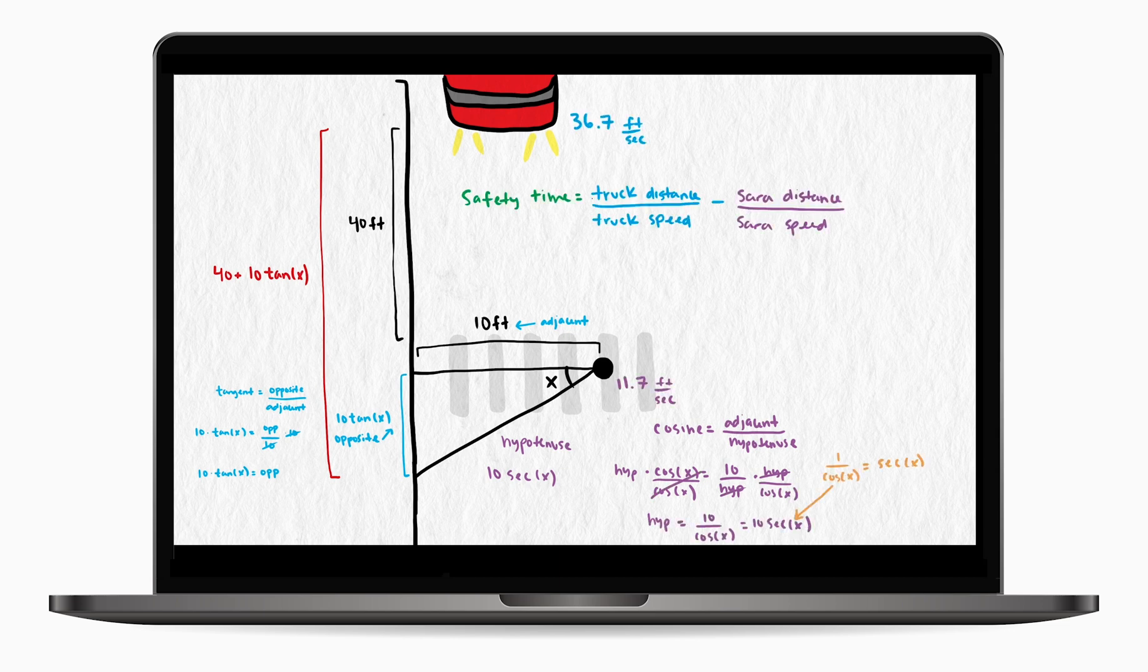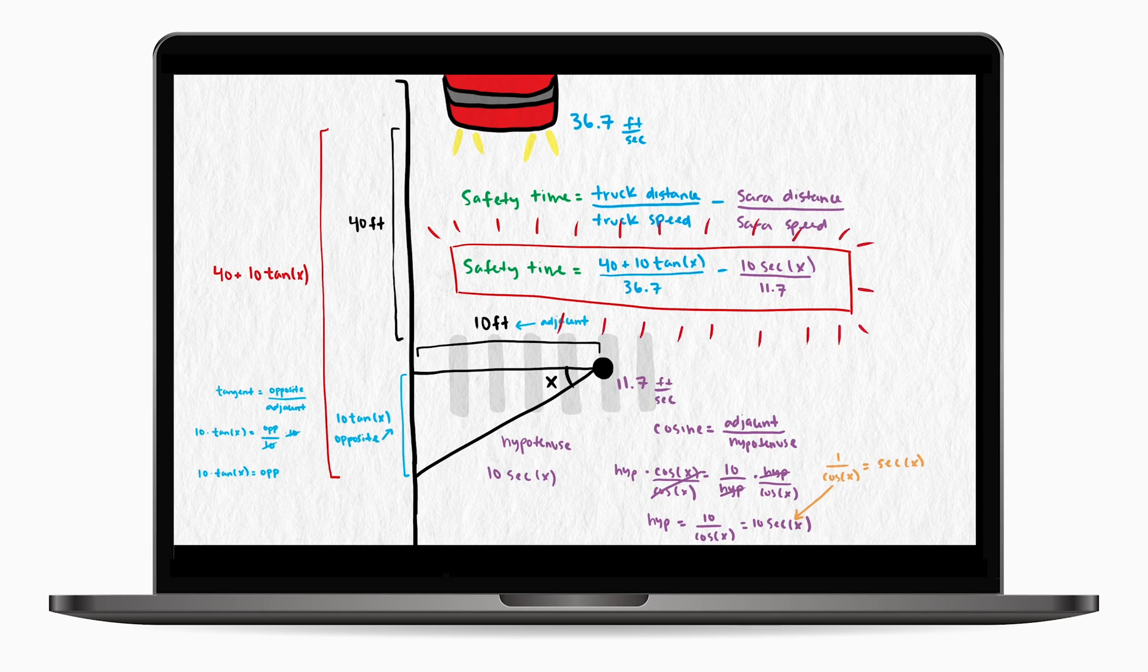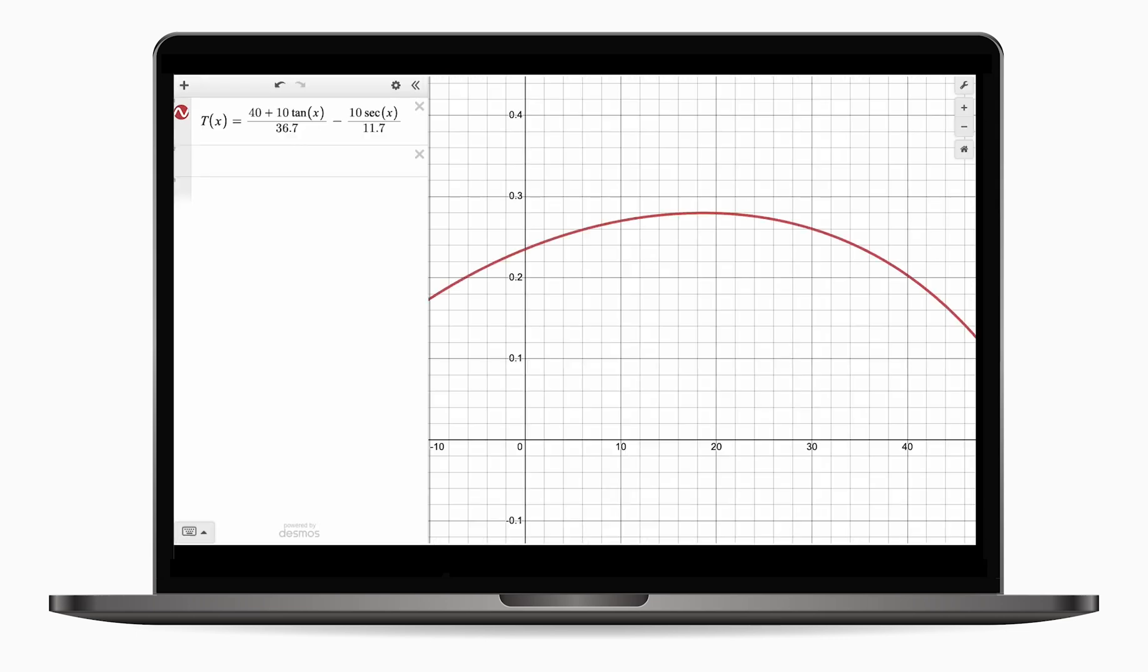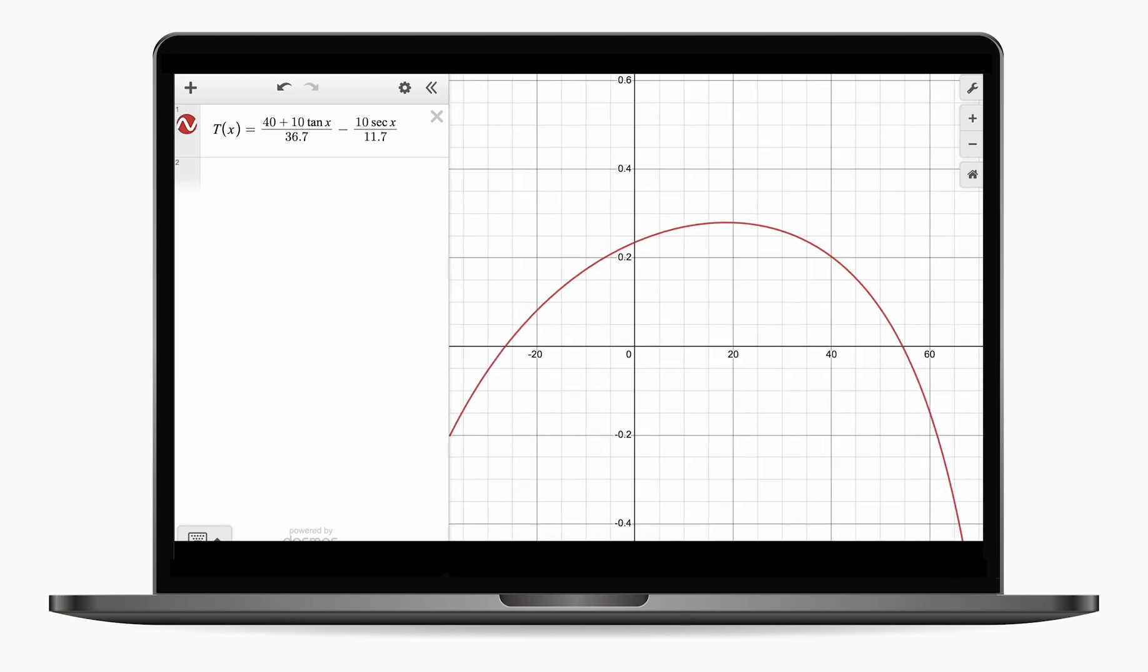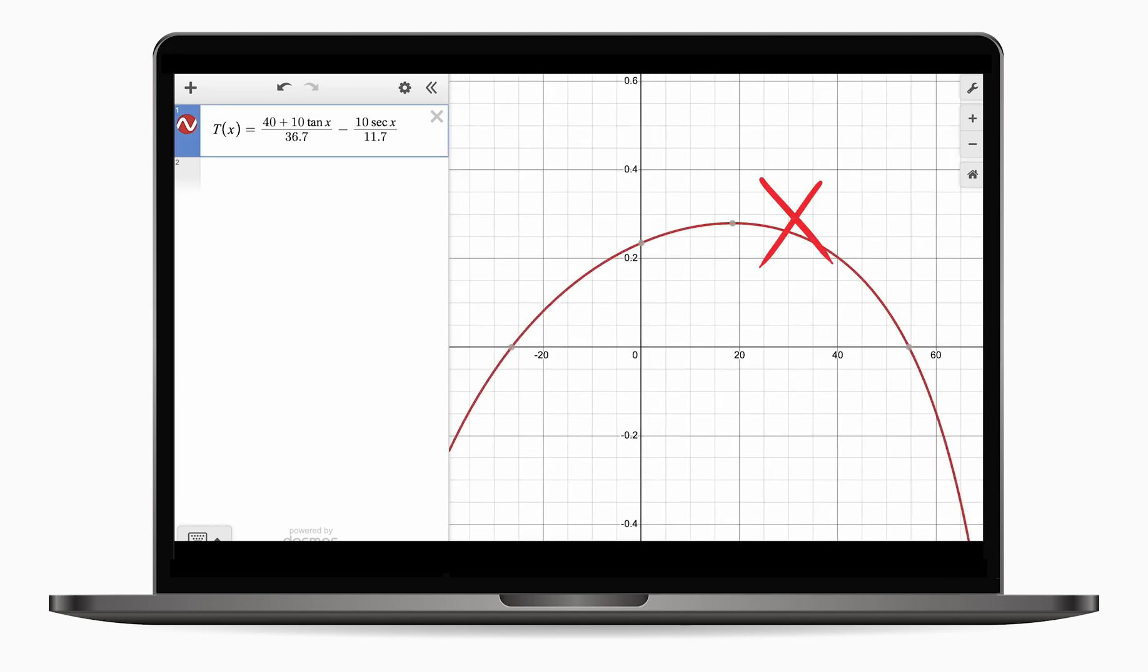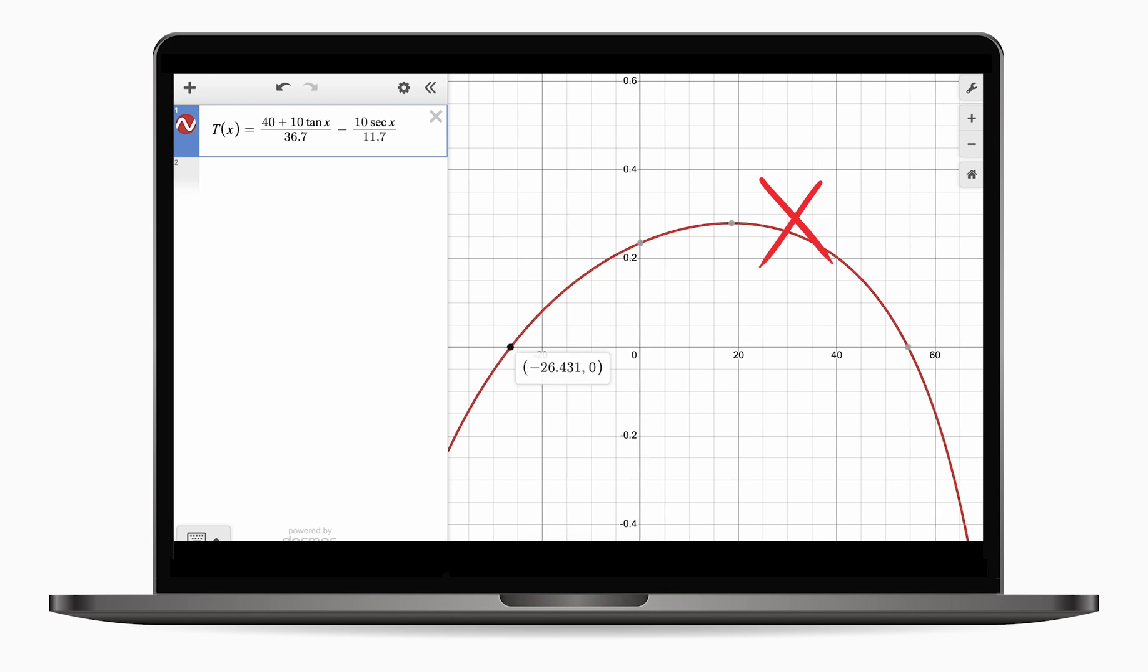In previous videos, we built a similar mathematical model for these evasion and pursuit problems. We looked at which angle maxed out this function to help the pedestrian know which angle to take to have the best chance of avoiding an oncoming truck. But in that situation, we tried to maximize the time between the person and object getting to the same spot. But the defensive back wants this time to be zero. They want to arrive at the edge of the field at the same time the ball carrier gets to their position. So the defensive back isn't looking to maximize this equation. They're looking for the direction that makes it so their time to get to the sideline equals the ball carrier's time to get to the defensive back. Or in other words, what angle makes this function zero?